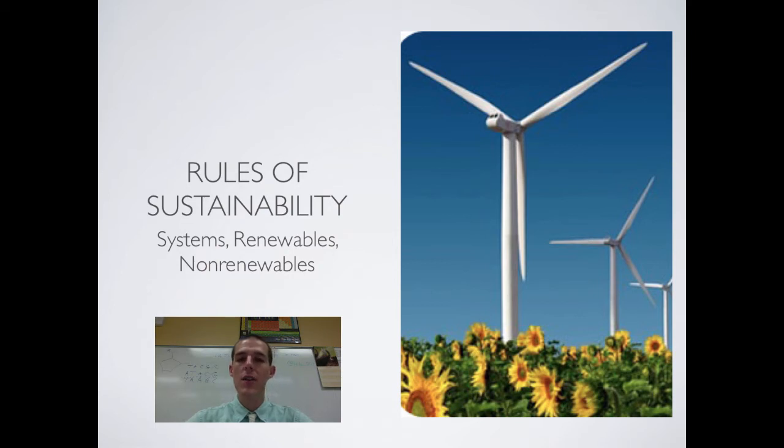It needs to rely on renewable energy sources, but it cannot use renewable energy sources or resources faster than they are able to replenish themselves. And it must use non-renewable energy sources very sparingly because they are not renewable. They're not coming back. So when people talk about developing in a sustainable manner, they are talking about these three rules right here.